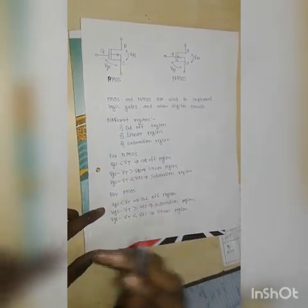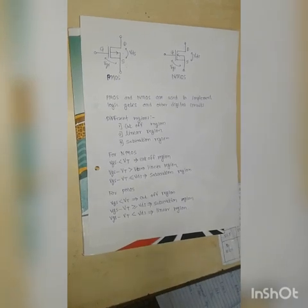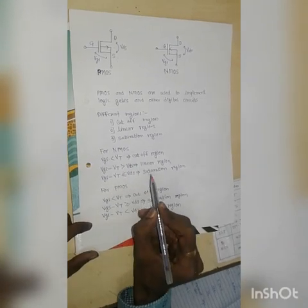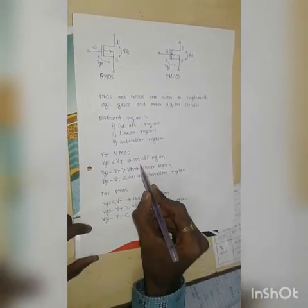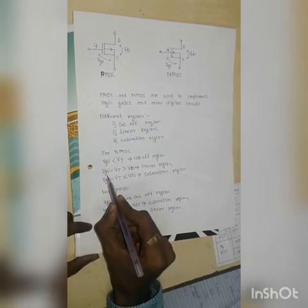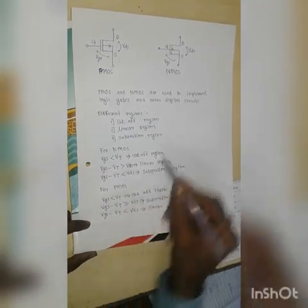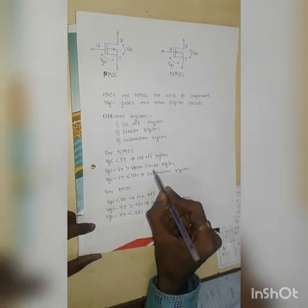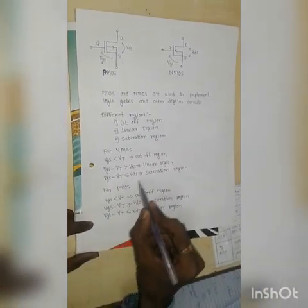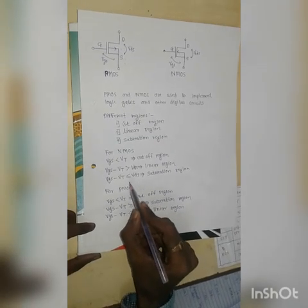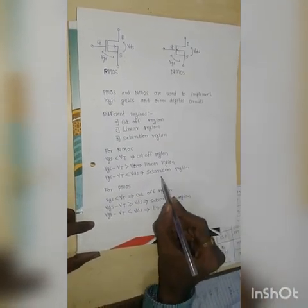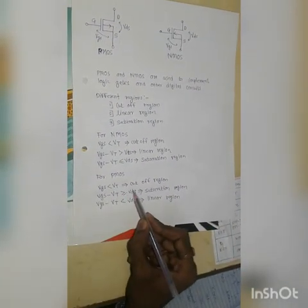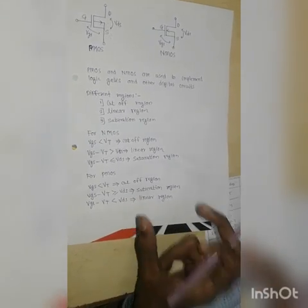For NMOS, if VGS is less than VT — the threshold voltage required for the transistor to turn ON — then the NMOS transistor operates in the cutoff region. If VGS minus VT is greater than VDS, then NMOS operates in the linear region. If VGS minus VT is less than or equal to VDS, then NMOS operates in the saturation region.